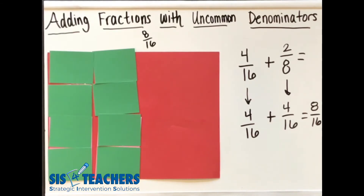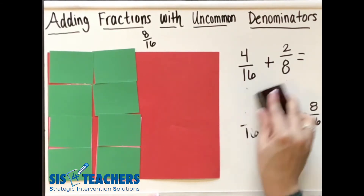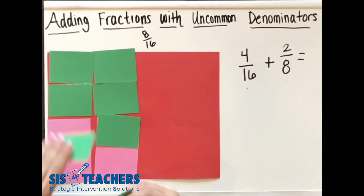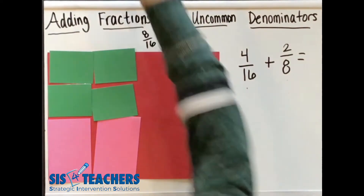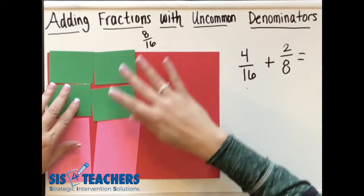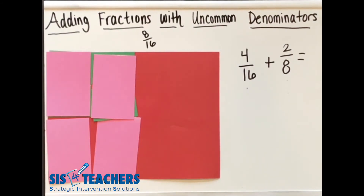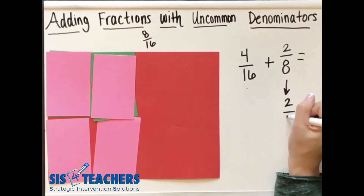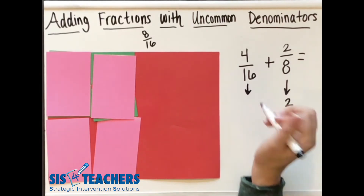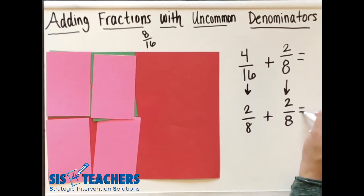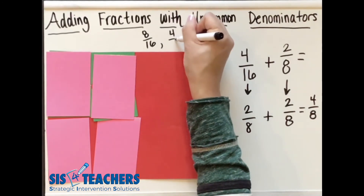Another student might have raised their hand and said something different: I didn't solve it that way. I didn't change all of these to sixteenths — I thought it would be easier to make these all eighths. So they may have said, I changed my four sixteenths into two eighths to add it together. So let's look at that in the algorithm. They kept the two eighths, and changed their four sixteenths to two eighths. Two eighths plus two eighths equals four eighths. So another answer they ended up getting is four eighths.